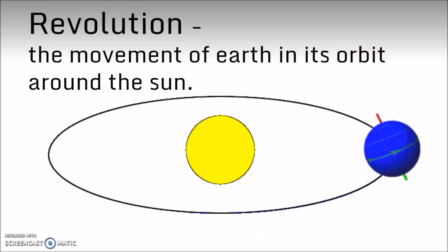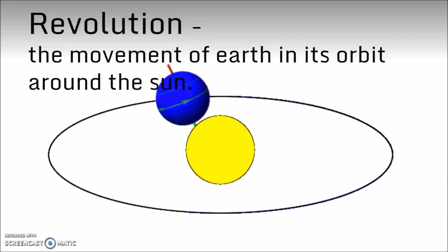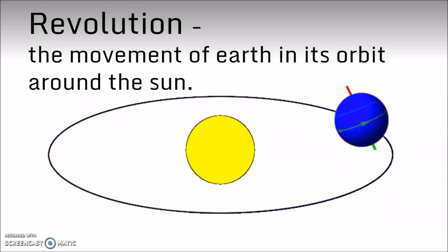Now, the Earth will also move around the Sun, and this is called revolution, the movement of Earth in its orbit around the Sun.